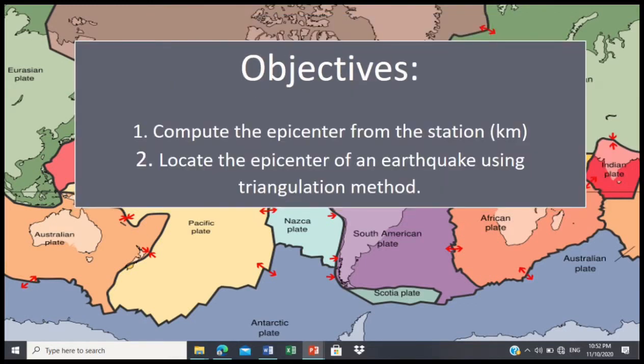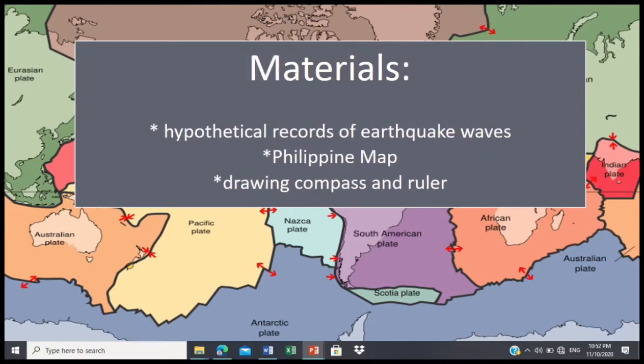Our objectives are: compute the epicenter from the station, and locate the epicenter of an earthquake using triangulation method. Our materials: hypothetical records of earthquake waves, Philippine map, and drawing compass and ruler.